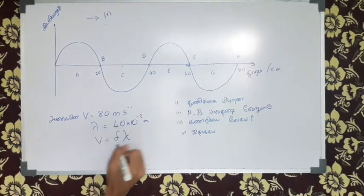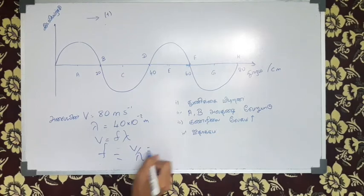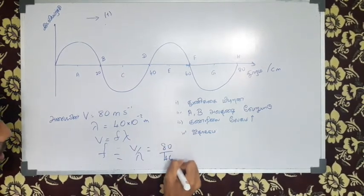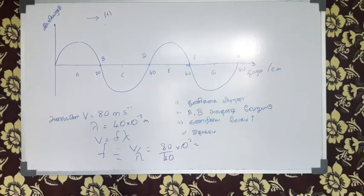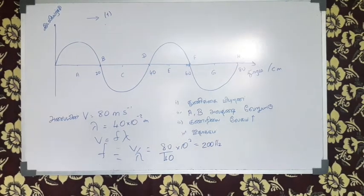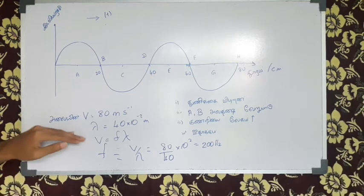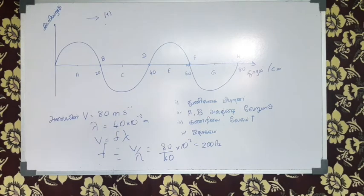V7, F lambda. F7, V over lambda. So, V7 — 50, 40 cm. So, it's 200 Hz. Okay, this is the first thing. It's 30 Hz. If you have 50 Hz — so, 50 cm.